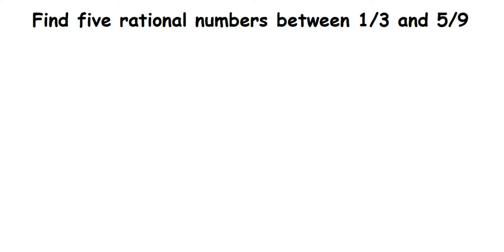Here's a question from rational numbers, and this type of question is really important for three or four marks. The question is: find five rational numbers between one by three and five by nine. Now there are infinitely many rational numbers between two rational numbers, so the numbers you get may be different from mine, your teacher's, or your friend's answer. You just have to check if the numbers are lying between them — I'll tell you at the end of the video how to check if your answer is correct.